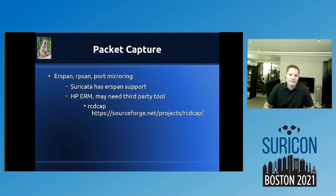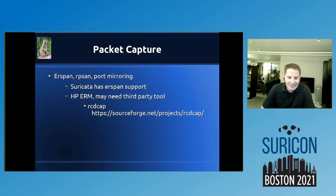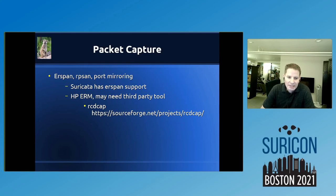For packet capture, Suricata has ERSPAN support as mentioned. There's also RSPAN, port mirroring, and HP ERM — I haven't used HP ERM but wanted to mention it. One tool I used before ERSPAN was supported in Suricata is an open source tool called ERSPANcap on SourceForge. It works well for chopping off those header bytes in ERSPAN — it creates a tunnel interface in Linux that becomes a standard RSPAN. That's something to keep in mind if you need it or don't want ERSPAN handled within Suricata itself.